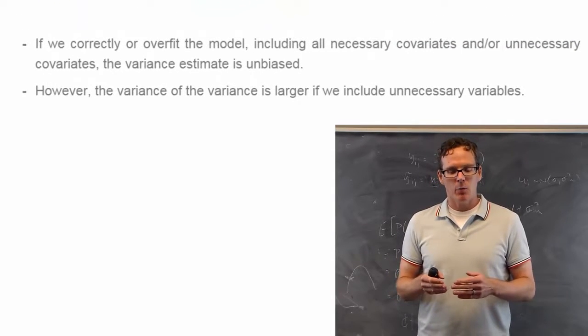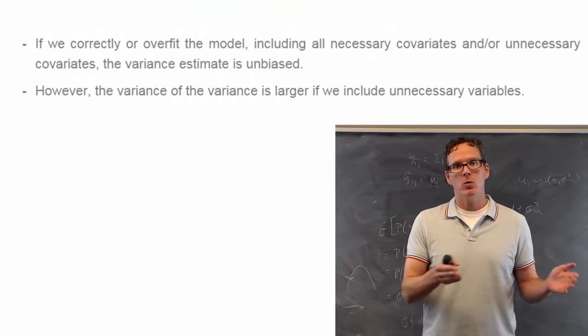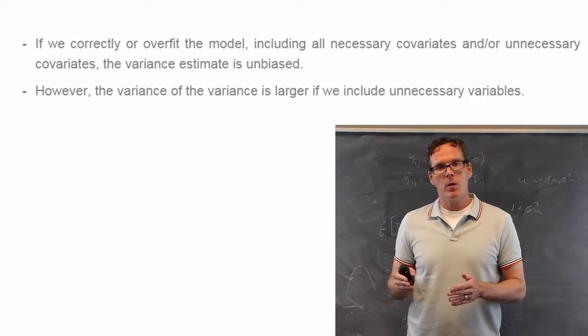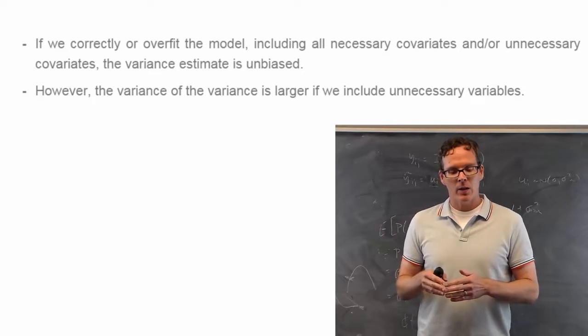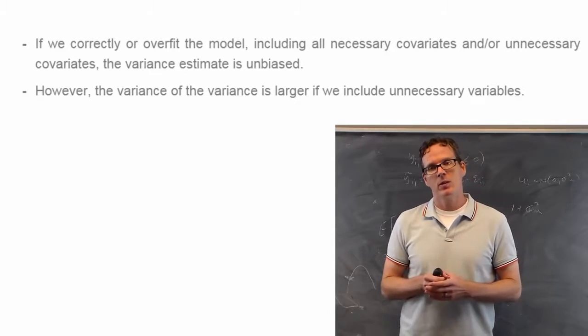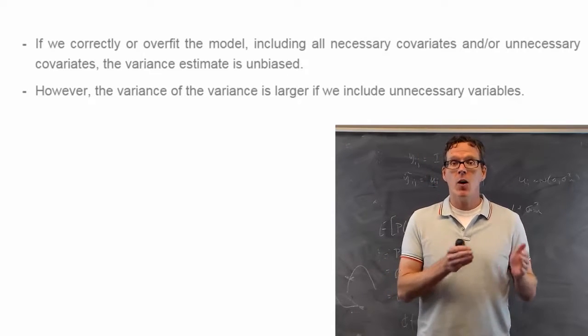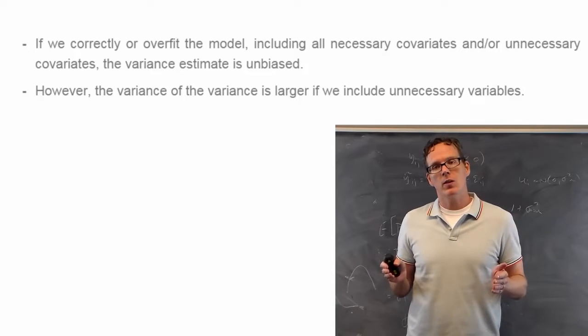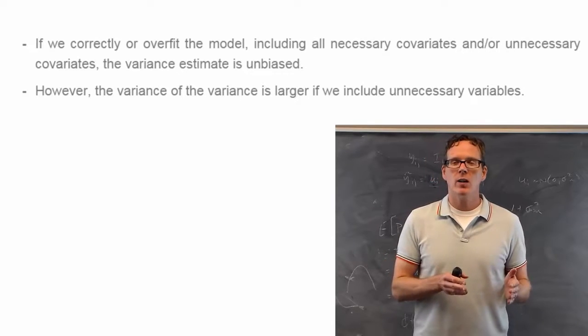On the other hand, if we either correctly fit the model, we include all the right terms, or if we overfit the model, then the variance estimate is unbiased. However, the variance of the variance estimate gets inflated if we include unnecessary variables. So it's actually kind of the same rule.